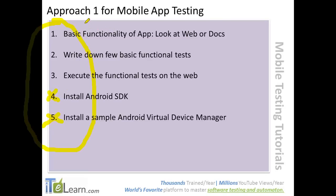The approach is: first, we will identify a web-based application and understand what basic functionality we need to test. Either we look at the web and pick up an application, or we look at some documentation — like functional documentation — for a specific application, and try to create some test cases. Then we will execute these functional tests on the web. After that, I am going to show you how to do it on an Android SDK using emulators.